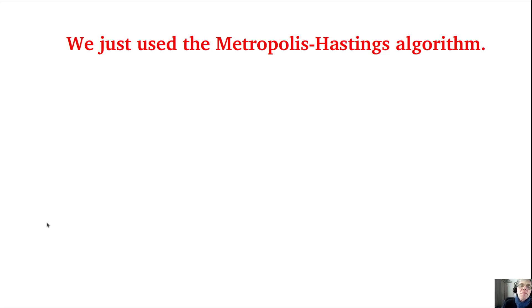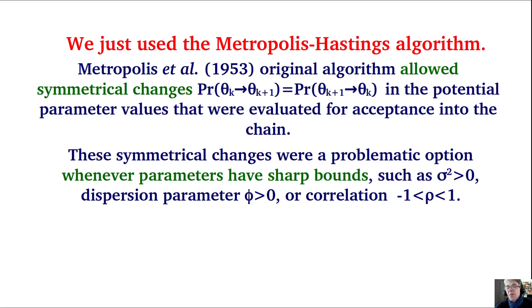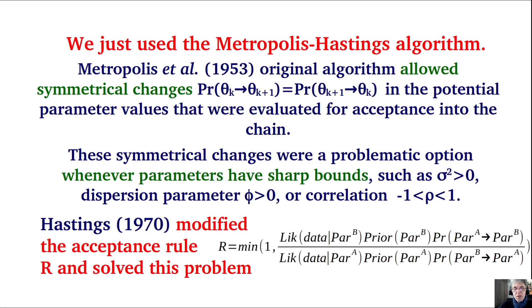The original Metropolis algorithm allows only symmetrical changes between candidate parameter values, which was problematic for parameters with sharp bounds — such as variances constrained to be positive, dispersion parameters required to be strictly positive, or correlations bounded between -1 and +1. What Hastings did was modify the acceptance rule so that the probability of going from value A to value B can differ from B to A. These asymmetric changes solve the problem, giving us the Metropolis-Hastings algorithm.